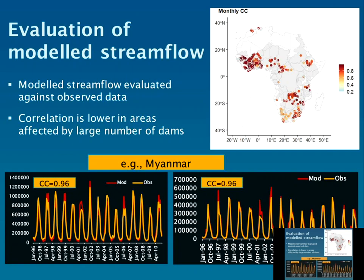Here's a quick example of evaluations of the modelled streamflow. We've done this over the whole of Africa where observational streamflow stations are available. The map shows model performance in terms of the correlation coefficient — very deep red colours indicate values of around 0.8 to 0.9, meaning the model is doing very well. In the more orange colours, especially in drier regions such as Namibia and South Africa, performance is lower.